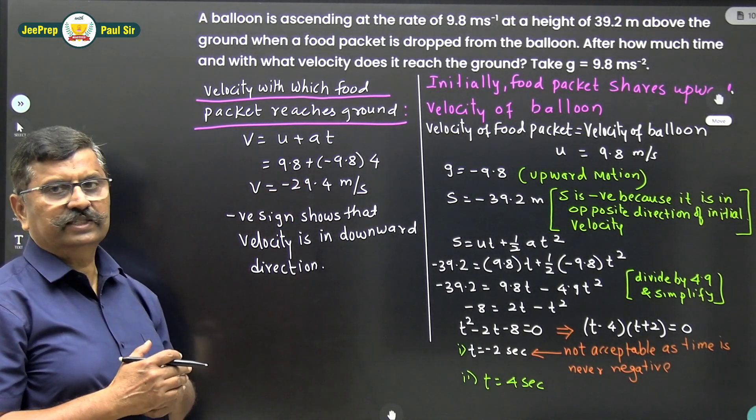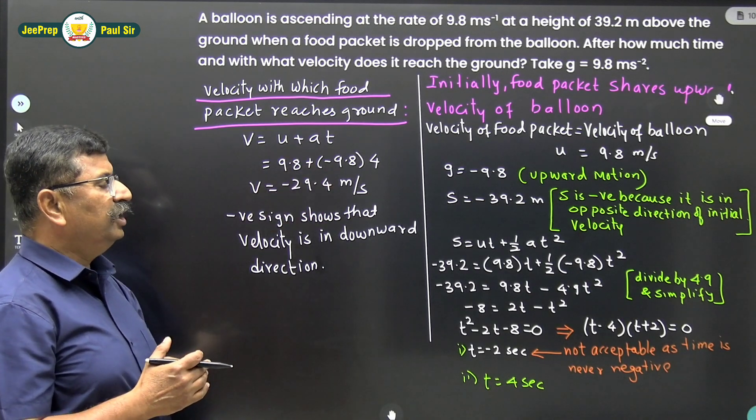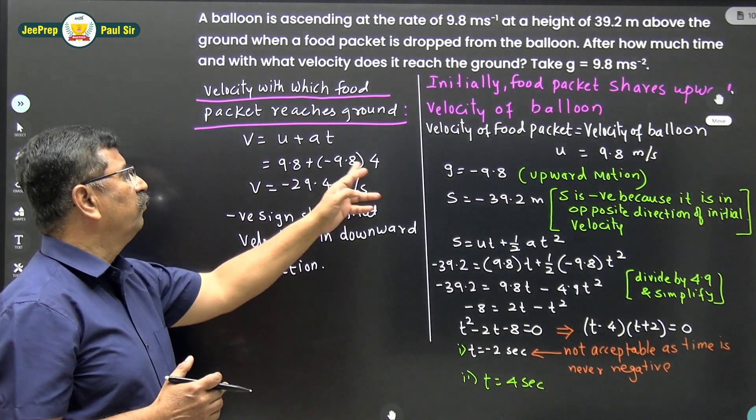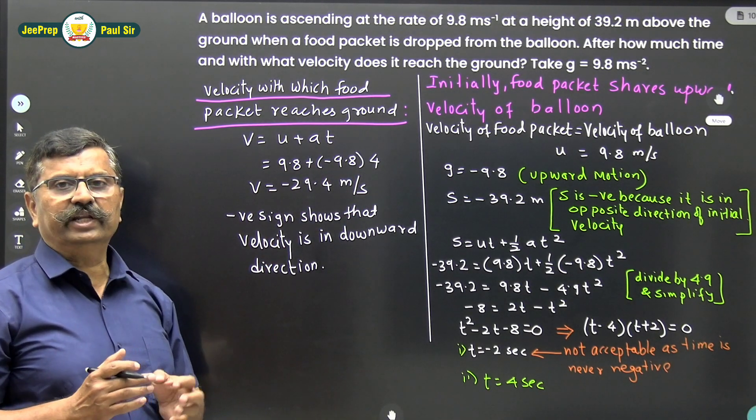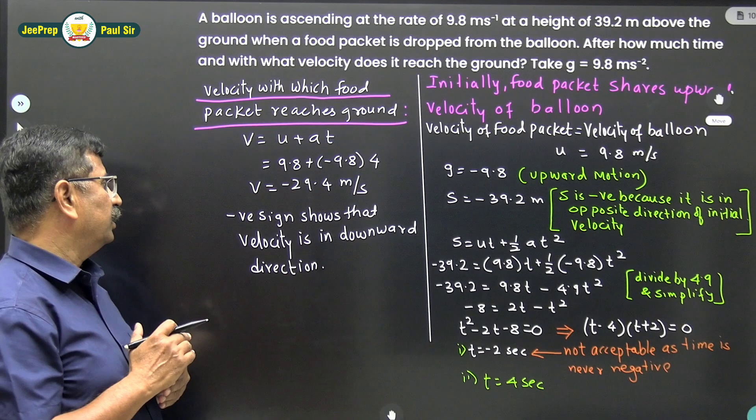I substitute this as is. a is minus 9.8 and t equals 4 seconds. If you simplify this, you will get v equals minus 29.4 meter per second.